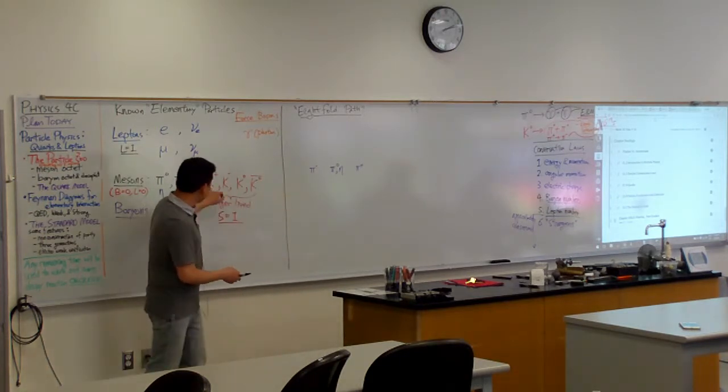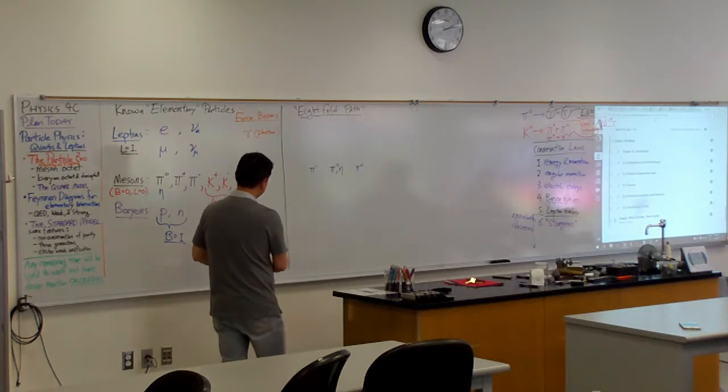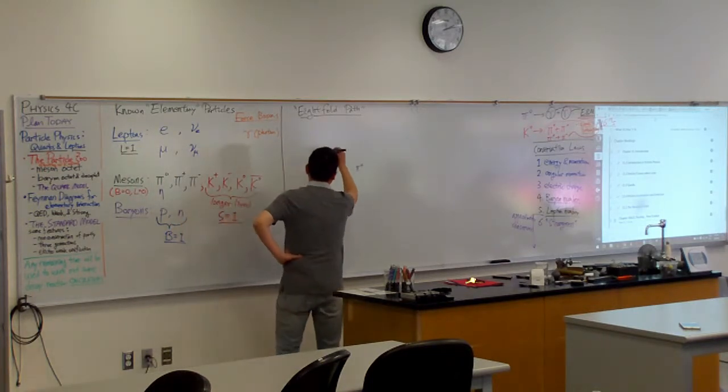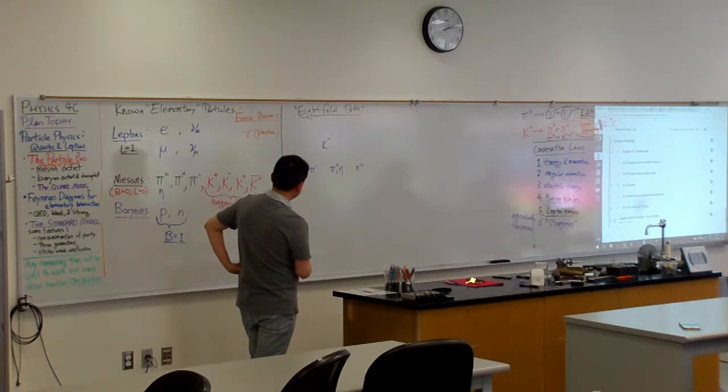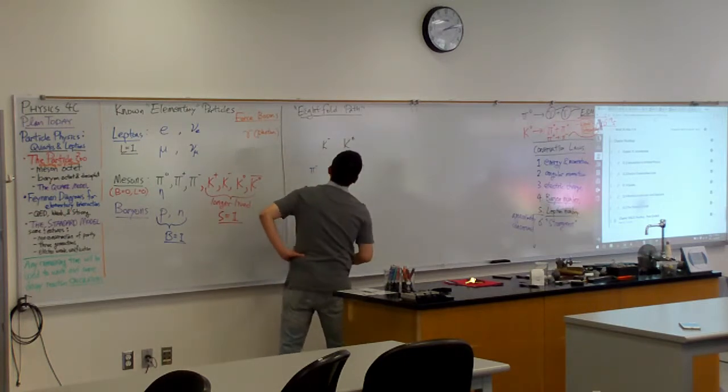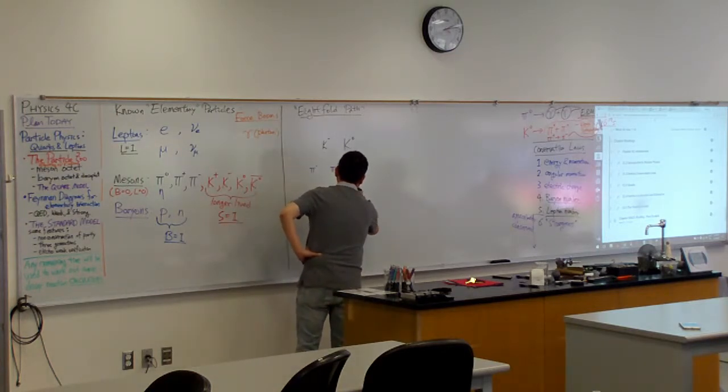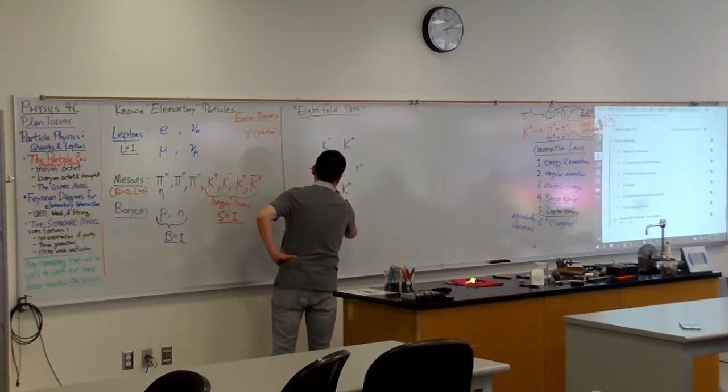And he arranged these K mesons kind of around it. This is where I have to be careful. I want to put the charged K minus here. Then you would have one of the neutral K mesons here. And you would have the positively charged K meson here, and the antiparticle version of the neutral K meson there.